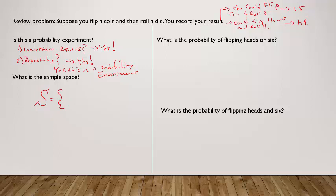All right, so let's start with this first one here. You could flip heads then roll a one, heads then a two, heads then a three, heads then roll a four, heads then roll a five, heads then roll a six. You get the same thing just with tails: tails then roll a one, tails then roll a two, tails then roll a three, tails then roll a four, tails then roll a five, and then tails then roll a six.